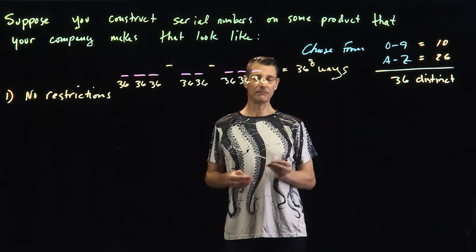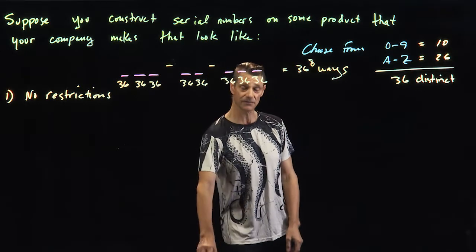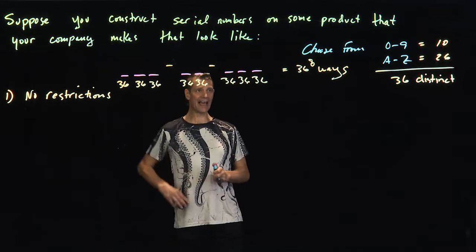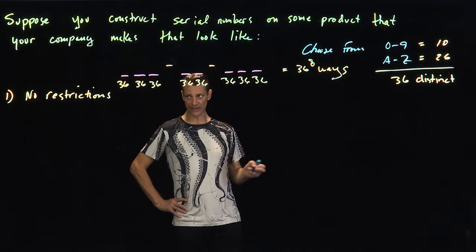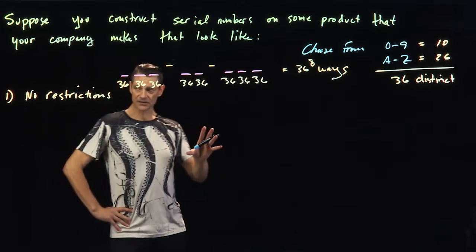You know, you may be selling millions of products, so it might not be that much and you might have to change things. But the whole point is we're trying to see how you can count the number of ways you're doing different things. So this is easy. If there are no restrictions, this is easy.